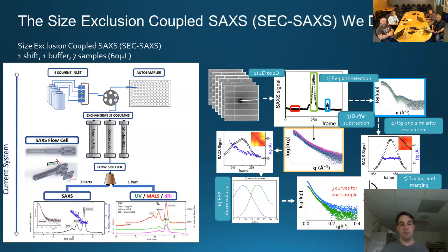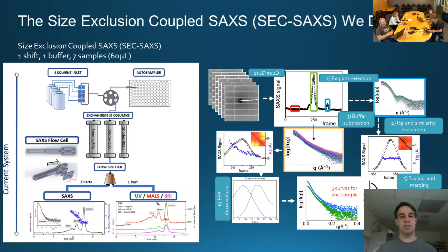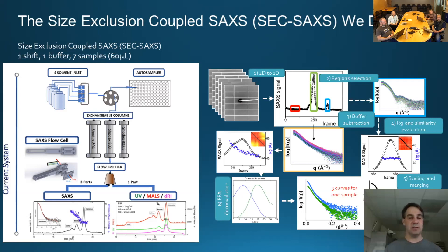The two techniques we run — one is size-exclusion coupled SAXS. For instructions, go to sibyls.als.lbl.gov. You will book one shift and be able to run with one running buffer. If you have seven samples in that running buffer, you can run that many per shift. The typical volume is 60 microliters. Your samples go into a plate, get injected onto a size exclusion column, the flow-through gets ported right in front of the x-ray beam, and small-angle x-ray scattering is collected. You also get UV moles and refractive index, so there's mass information as well.